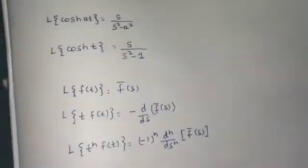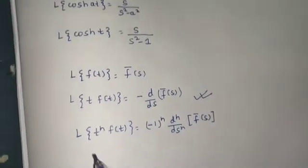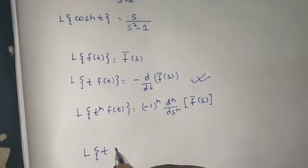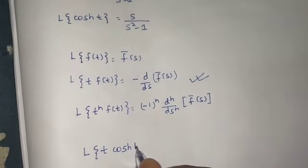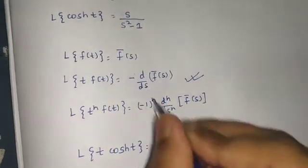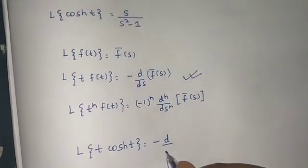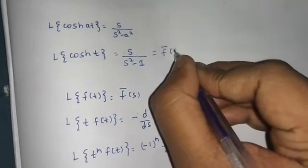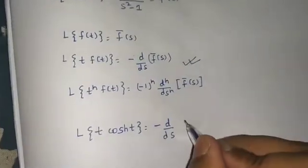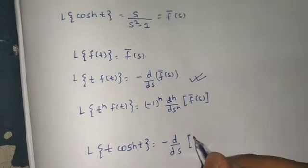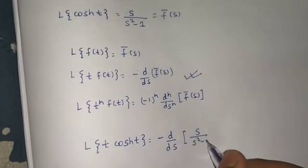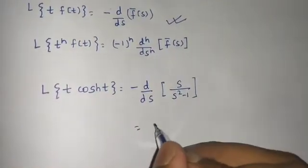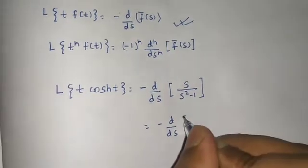In this question we need to multiply by just one t, so we use this result. We can say that Laplace of t·cosh(t) will be minus of the derivative with respect to s of s/(s²-1), because that is nothing but the Laplace of cosh(t). So we need the first derivative with a negative sign of s divided by s² minus 1.